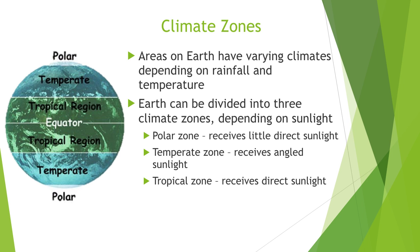The Earth can be divided into three climate zones. Climate zones have varying climates depending on the rainfall and the temperature — the climate is not just determined by the weather. The amount of sunlight that a zone receives determines which zone it's in. The polar regions are on either pole and receive little direct sunlight. The temperate zones receive angled sunlight depending on the angle of the Earth on its axis. The tropical zone is around the equator, so it receives the most direct sunlight of any region on Earth.